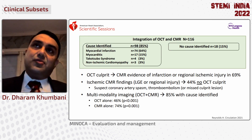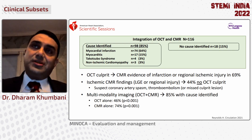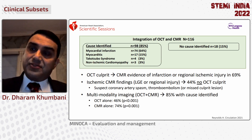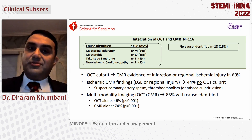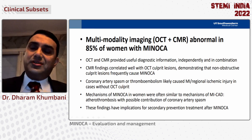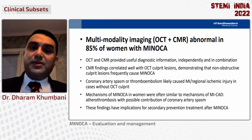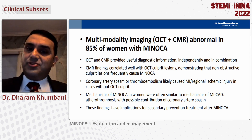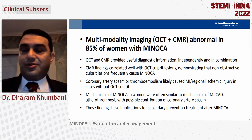One conundrum is if you have a positive MRI suggesting a regional infarct but OCT is normal — you have to think about spasm, thromboembolism, or a misidentified culprit lesion. This emphasizes that multimodality imaging with OCT and cardiac MRI is really the standard of care for patients with MINOCA. They provide complementary information that you cannot get with one modality alone, and certainly not with angiography.